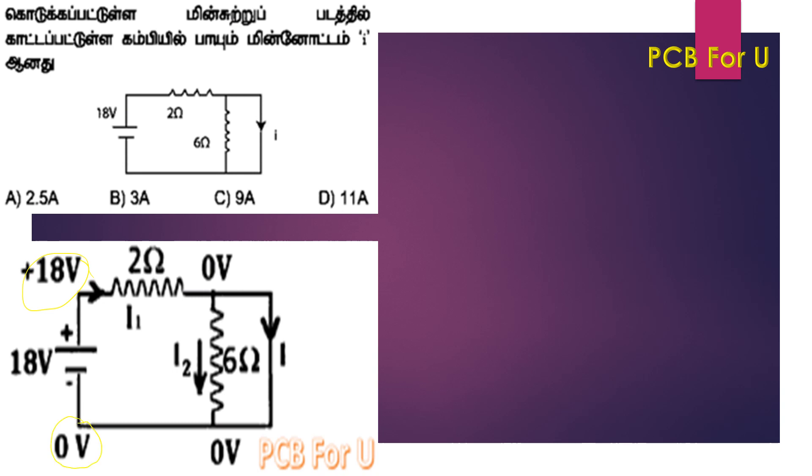We have a circuit here with a switch, a 6 ohm resistor. Looking at this circuit, we can see the switch is connected. This is at plus 18 volts.